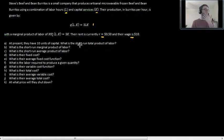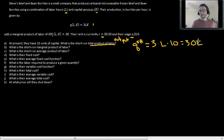So for part A, at present, they have 10 units of capital. What is their short-run total product of labor? If you remember in the short-run total product of labor is another name for output because capital is fixed. And so their short-run product of labor, QSR, is going to be, we just plug in the fixed capital there. So they have 10 units of capital. It's going to be 3 times L times 10, which is 30L. And so that's their short-run output, total product of labor.